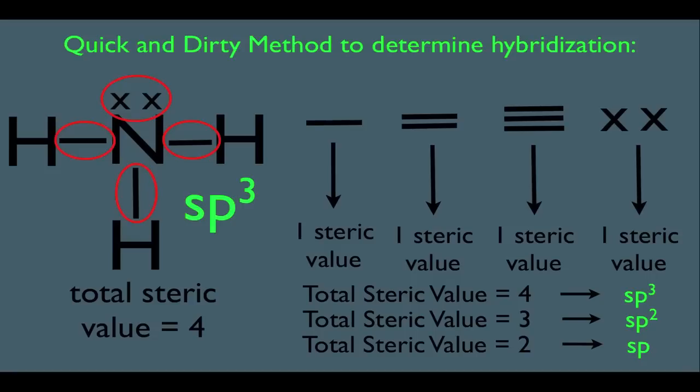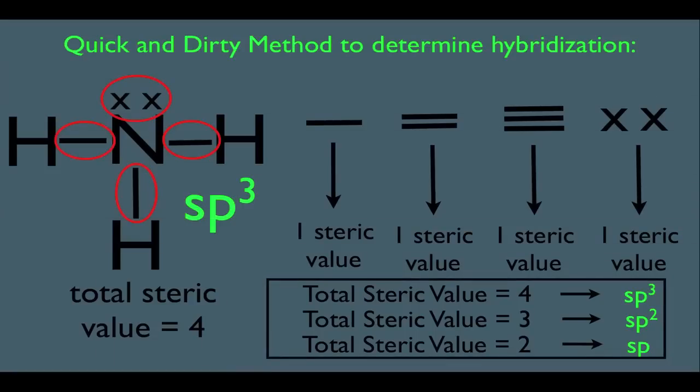Now in organic chemistry, we're only concerned with these three types of hybridization. That's why we're only concerned with the steric value of two, three, and four. This is not the only way to determine hybridization, but it's a method I'd like you to know just in case.